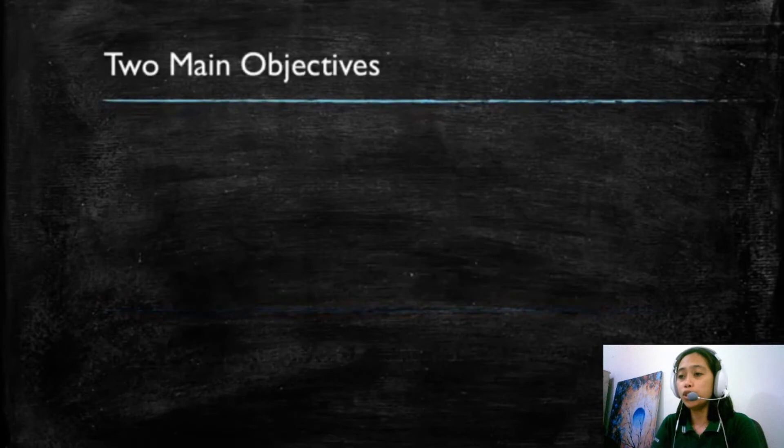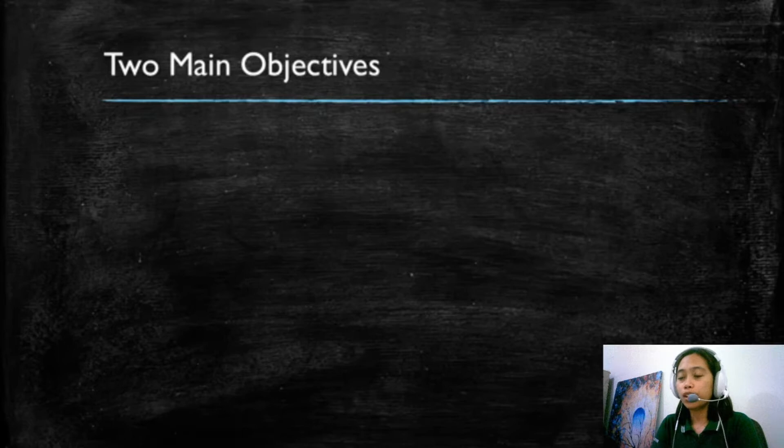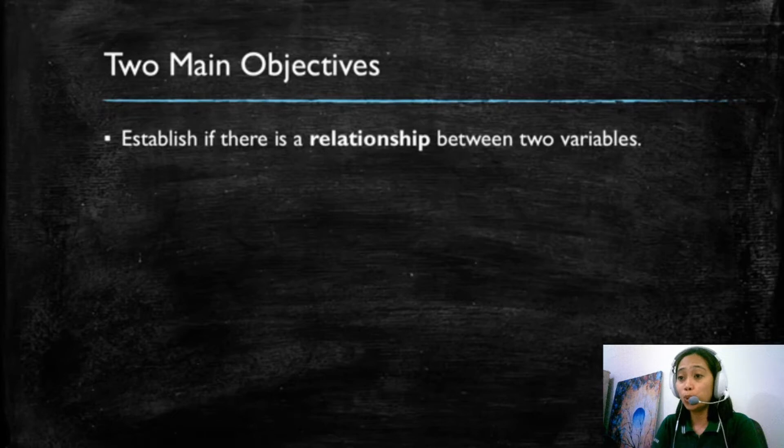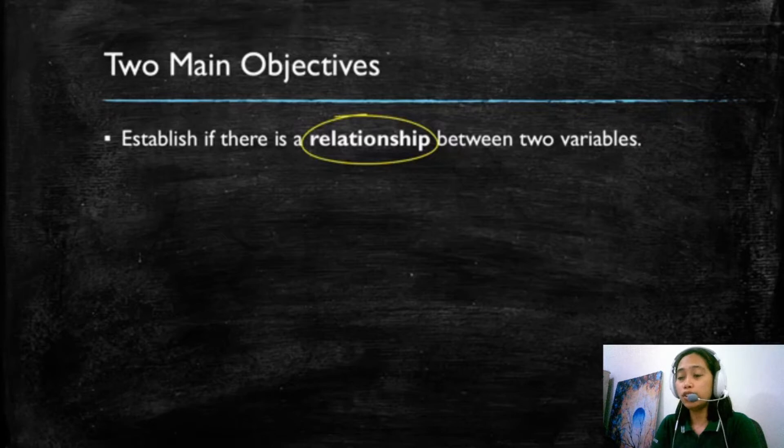Simple linear regression or regression models in general have two main objectives. The first one is to establish if there's a relationship between two variables. We're going to be talking about a positive relationship between two variables if they tend to move together in the sense that when one increases, the other one increases as well. And conversely, in a negative relationship, we find that if one variable's values increase, the other variable's values tend to decrease.